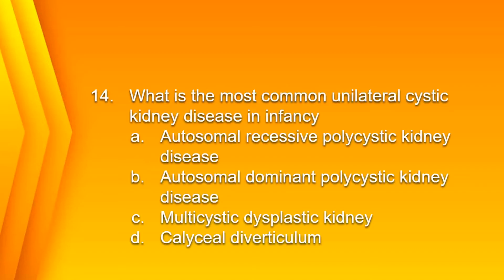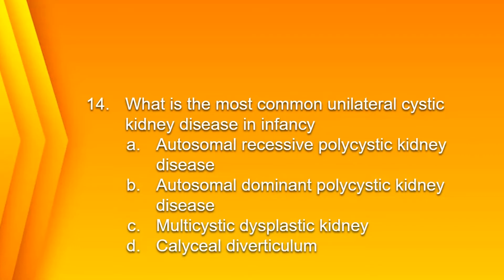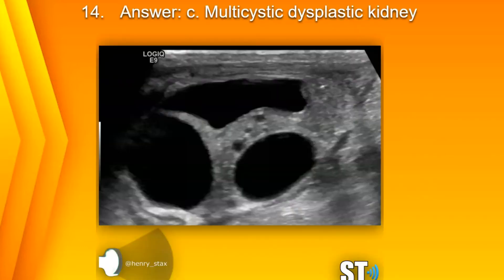Number 14: What is the most common unilateral cystic kidney disease in infants? A. Autosomal recessive polycystic kidney disease, B. Autosomal dominant polycystic kidney disease, C. Multicystic dysplastic kidney, or D. Calyceal diverticulum? The answer is C. Multicystic dysplastic kidney.